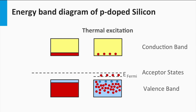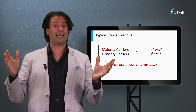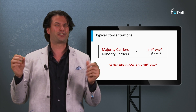As a result, we have more free mobile holes than mobile electrons in a p-type semiconductor. The electrons are the minority charge carriers and the holes are the majority charge carriers. As the holes are the majority charge carriers, the Fermi level will be closer to the valence band than to the conduction band.